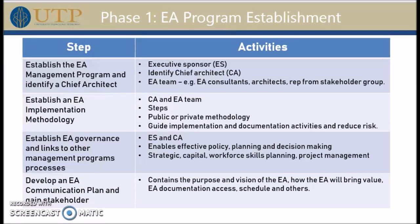Next is about establishing the governance. When you have a methodology, you need to know who is responsible for each of the activities or each of the steps. You need to know who is going to make decisions, what policies are involved, and if there are going to be meetings — how frequently and who will attend. That is what governance is all about. The executive sponsor and the chief architect will be involved in establishing this governance, which is about coming up with effective policy, planning, and decision making.